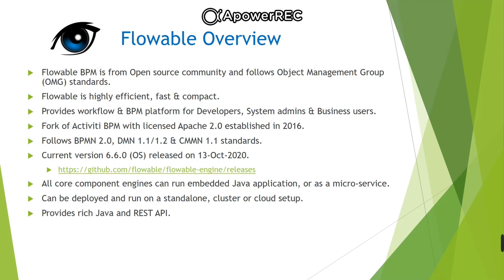Flowable allows us to create, deploy, execute and monitor business processes throughout their lifecycle. It is highly efficient, fast and compact, tried and tested by many developers over many years. It provides a workflow and BPM platform for developers, system admins and business users. Flowable is forked from Activiti BPM with a licensed Apache 2.0 version established in 2016. It follows the standards of BPMN 2.0, DMN 1.2 and CMMN 1.1 for case management. The current latest open source version is 6.6.0, released on 13th October 2020.